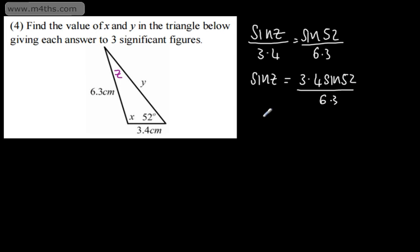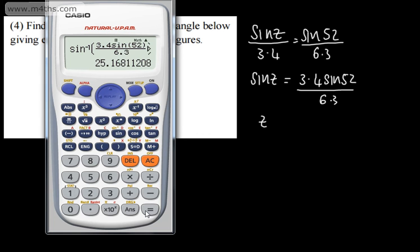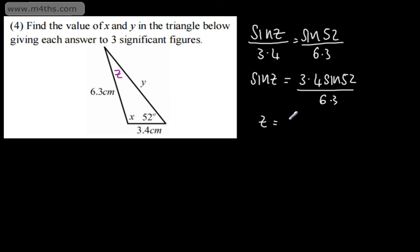We've seen this in a previous video. At this stage, I'm simply going to take the inverse sine of both sides of this equation, making sure that I'm in degrees — shift sine, so it's the inverse sine — of 3.4 sine of 52 over 6.3. So 6.3 goes in there, and this gives us the size of z. So z is equal to 25.168...